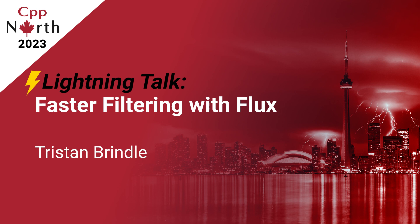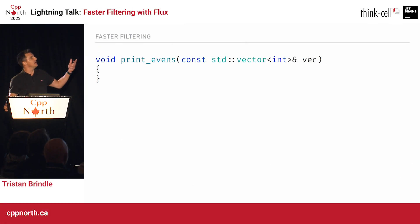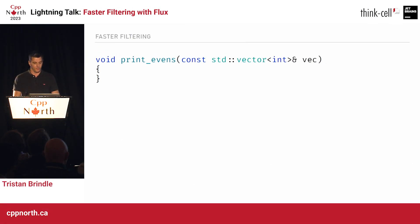Hello everyone. This is faster filtering with Flux. So here's what we want to do: we want to write a function that takes a vector of integers and we want to print the even elements of that vector.